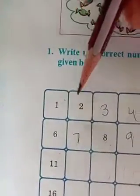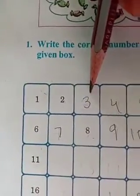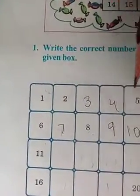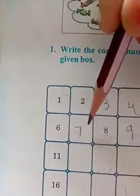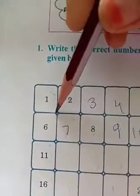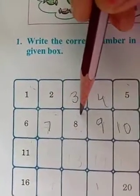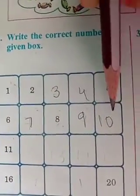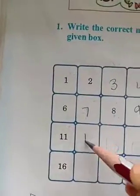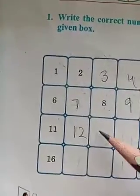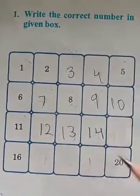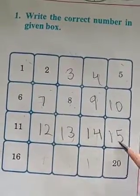So let us read, children. One, two, three, four, five, six, seven, eight, nine, ten. Then here: eleven. After eleven? Twelve. After twelve? Thirteen. After thirteen? Fourteen. After fourteen? Fifteen.